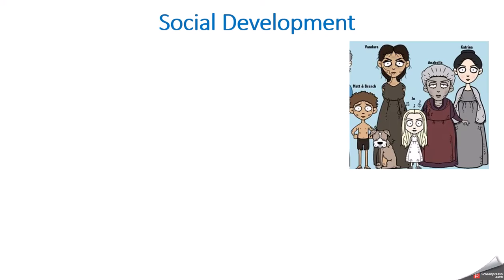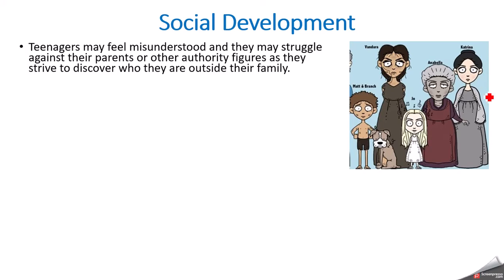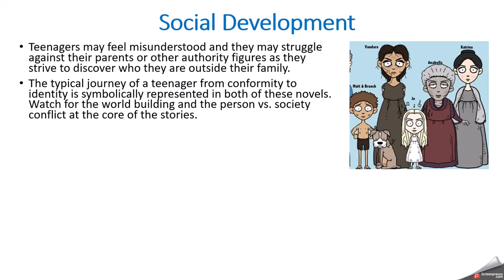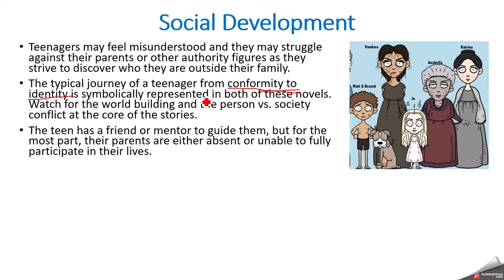On social development: teenagers might feel misunderstood and struggle against their parents or authority figures as they try to discover who they are outside their family. The typical journey of a teenager is symbolically represented here — moving from conformity to identity. Unlike regular teenagers who move from conformity of their parents to conformity of a peer group, by the time they're 18, 19, or 20 they can sometimes break free and form a true identity of their own. Watch for world building and person-versus-society conflict — that's the core of these stories.